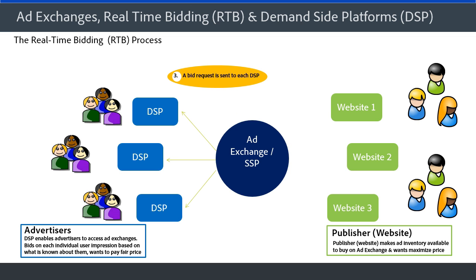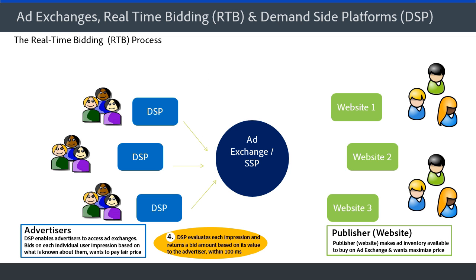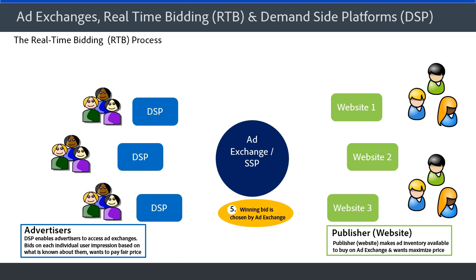This whole process takes 100 milliseconds or less. The ad exchange holds an auction for each individual user impression. They send a bid request to each DSP to bid on that impression. Today, a million bid requests can go out in a second — this is happening very fast and there's a lot of data being sent around. The DSP evaluates each impression and returns a bid amount based on its value to the advertiser, all happening in 100 milliseconds or less. The winning bid is chosen by the ad exchange, and an ad is shown on the publisher website.